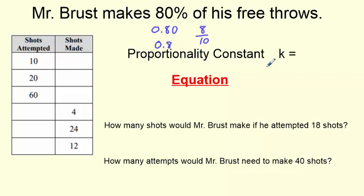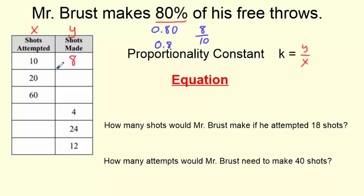Do you remember the proportionality constant? Remember, this was Y over X — define K, it's just Y over X. In this case, X is usually the first one, Y is the second one. I'm going to take my shots made and divide it by my shots attempted to see what kind of free throw shooter I am. I can tell by my ratio right here that I'm going to make 8 out of 10.